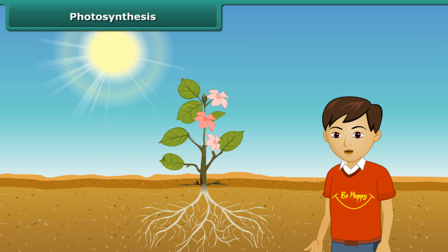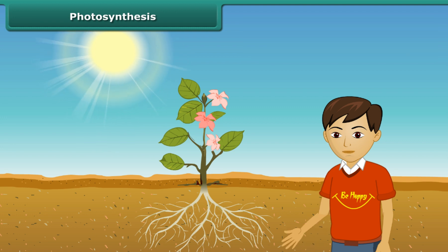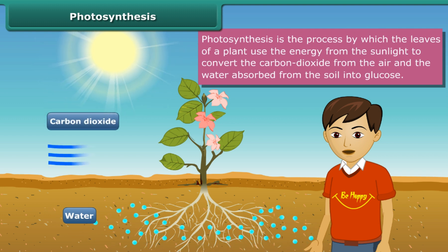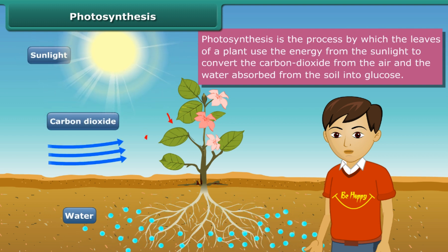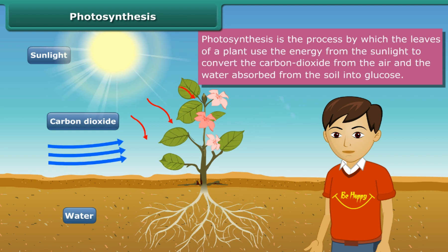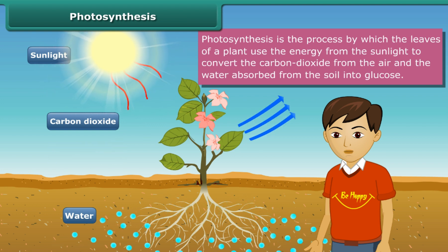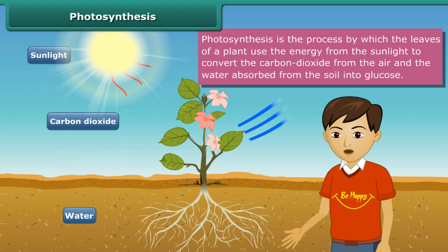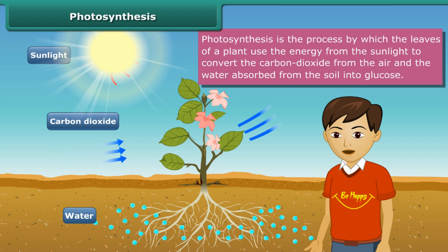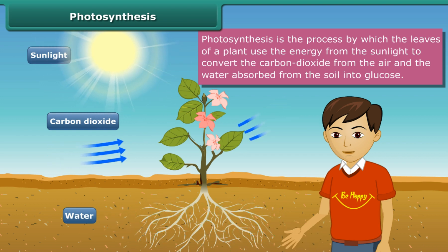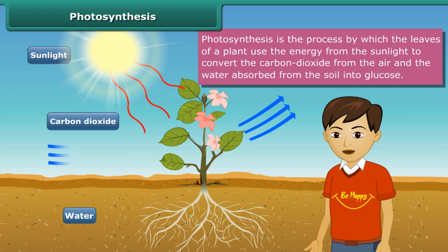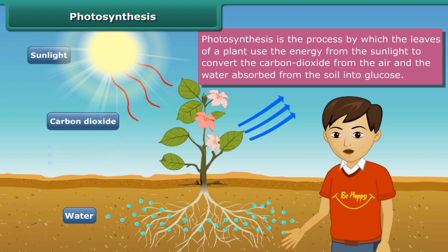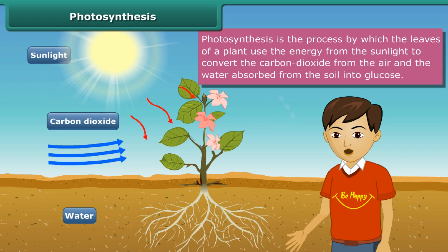This process takes place in the leaves of the plant. In this process, the leaves use the energy from the sunlight to convert the carbon dioxide absorbed from the air and the water absorbed from the soil into glucose. The food prepared by leaves is then transported to the different parts of the plant.